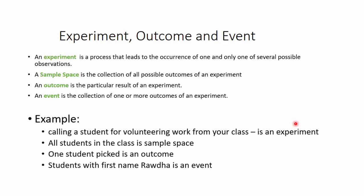A simple example: picking students for volunteering work from your class. That's going to be an experiment because you do not know the outcome of the experiment, as they are uncertain as to who would be picked. The sample space is all the students in your class. Picking only one student becomes an outcome. And if you pick students with the first name Ratha, then that becomes an event.